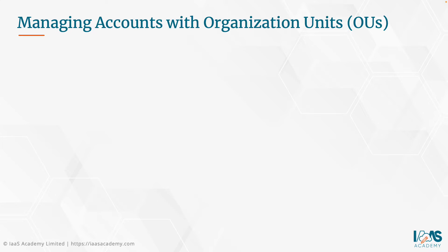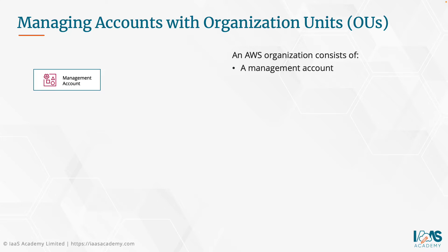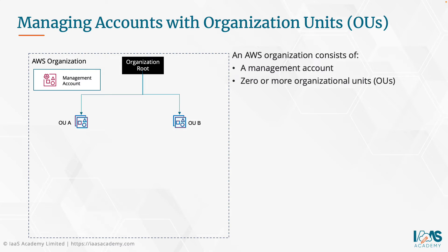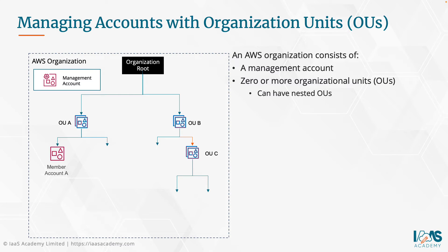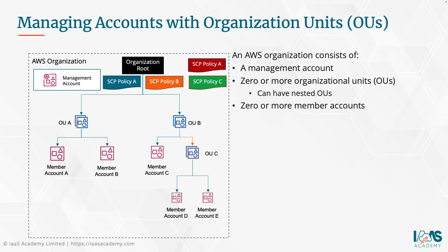SCPs allow you to define what services can be consumed and which resources can be provisioned. Within each organization, you will have one management account. You can then define one or more organization units. An OU can also contain additional OUs within them - what we call nested OUs - which allows you to further define more restrictive policies for specific member accounts. Contained within these OUs, you can have one or more member accounts. You can define service control policies that are applied to the individual OUs, and these allow you to define policies and permissions that filter down into the member accounts. It's also possible to apply an SCP directly to a member account, however this is not considered best practice due to its additional management overhead.